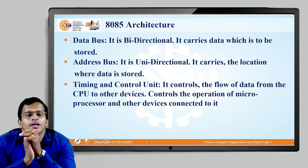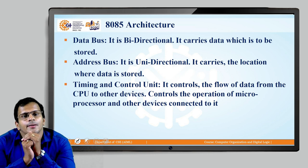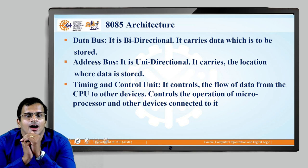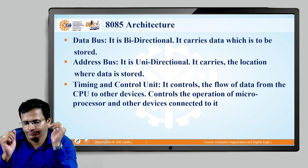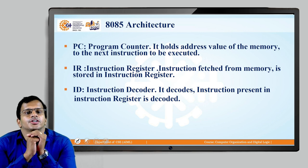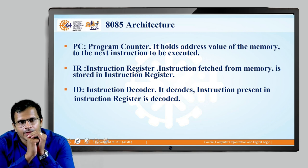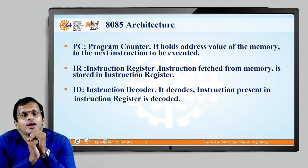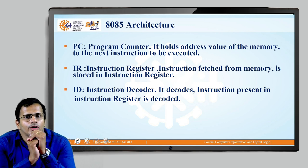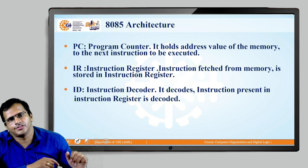Timing and control represents the brain of the human being — it provides signals to all other units indicating what operations are to be performed. Next is the program counter, instruction register, and instruction decoder. To properly understand these concepts, we will look at the instruction fetching process in the next lesson, at which point we will clearly understand the program counter, instruction register, and instruction decoder.